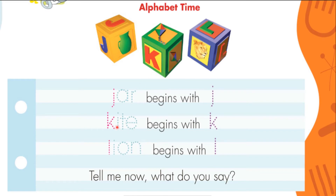Muy bien, mis niños. Ahora vamos a trazar las palabritas que vemos por aquí. Tenemos la primera palabra: Jar. J, A, R. JAR begins with J. JAR empieza con J.